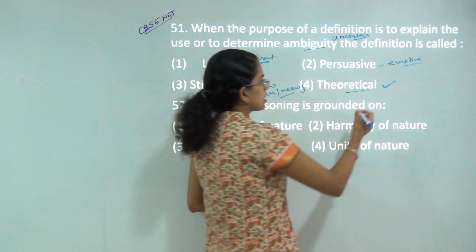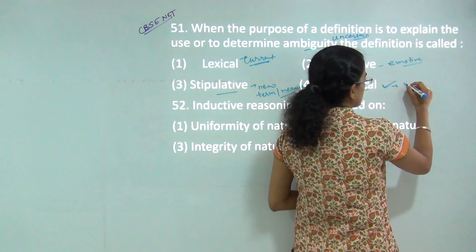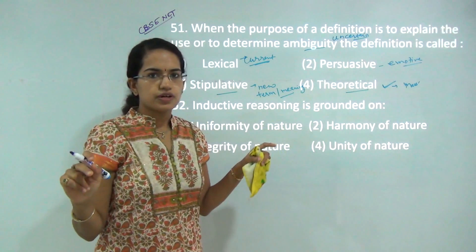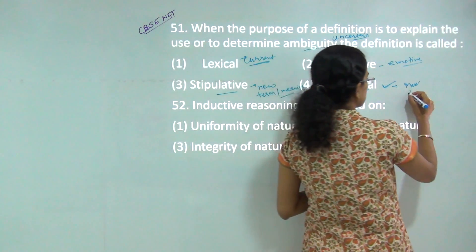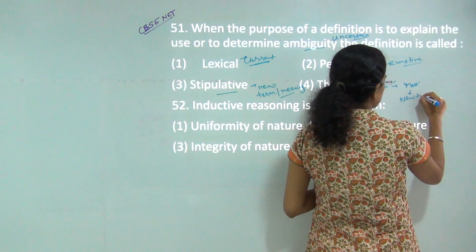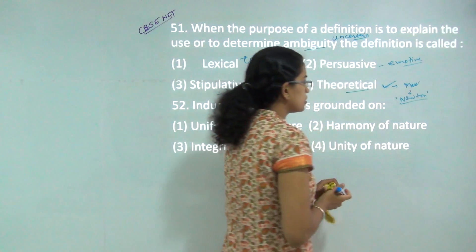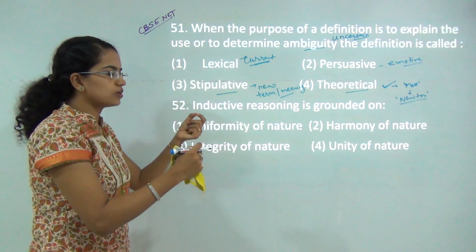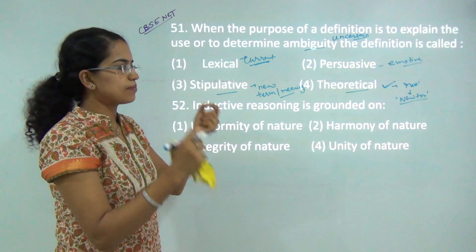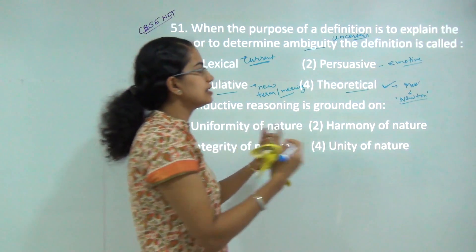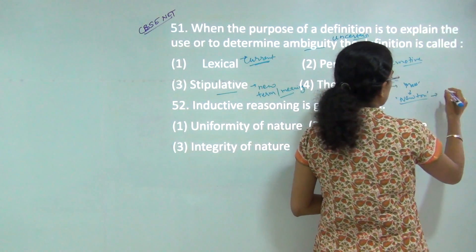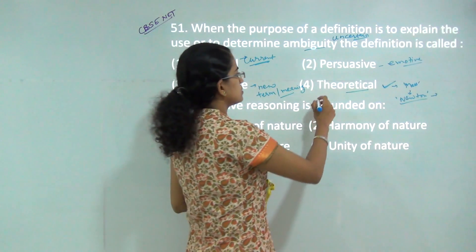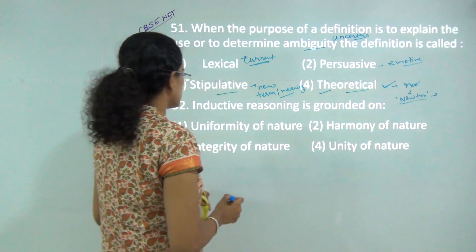For example, if I say mass, I am explaining the meaning of mass in relation to Newton's laws. I am trying to explain that concept, explain its applicability, and then generalize or extend it further. That is what a theoretical definition is.